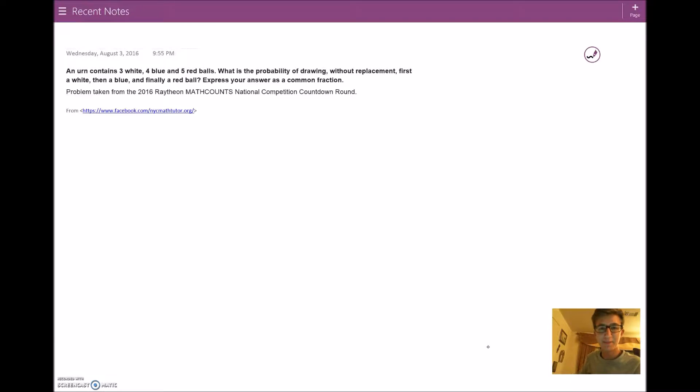Hi everyone, my name is Daniel Selyton and I will be going over a MATHCOUNTS problem today. We have an urn that contains three white, four blue, and five red balls. What is the probability of drawing without replacement first a white, then a blue, and finally a red ball? Express your answer as a common fraction.